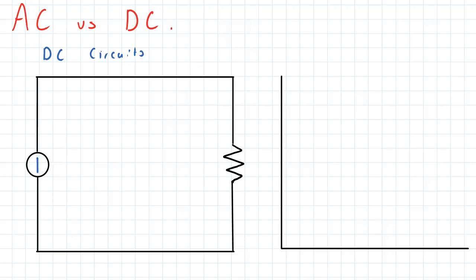And basically what happens here is that the current flows in just simply one direction. It just keeps flowing in that direction, passes through the resistor, which has a voltage drop across it.